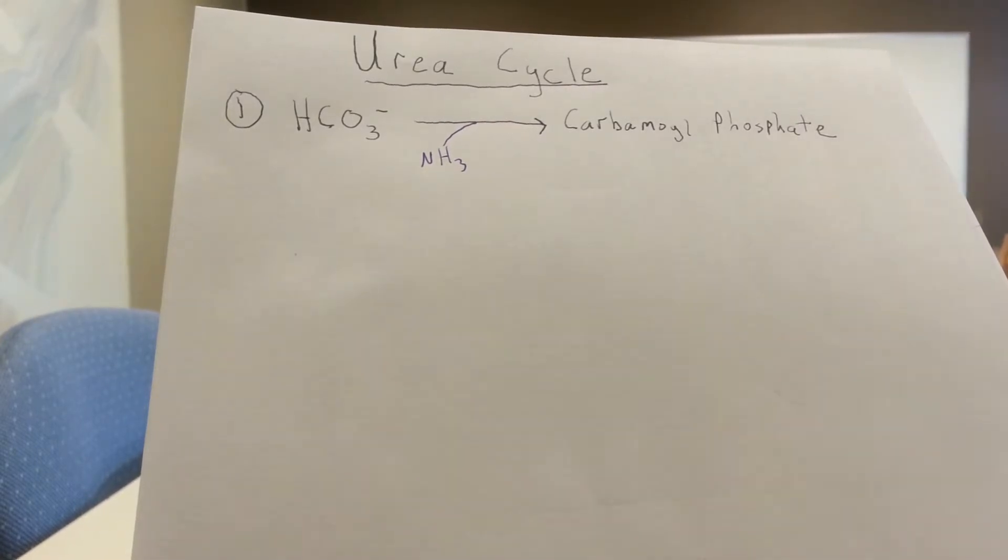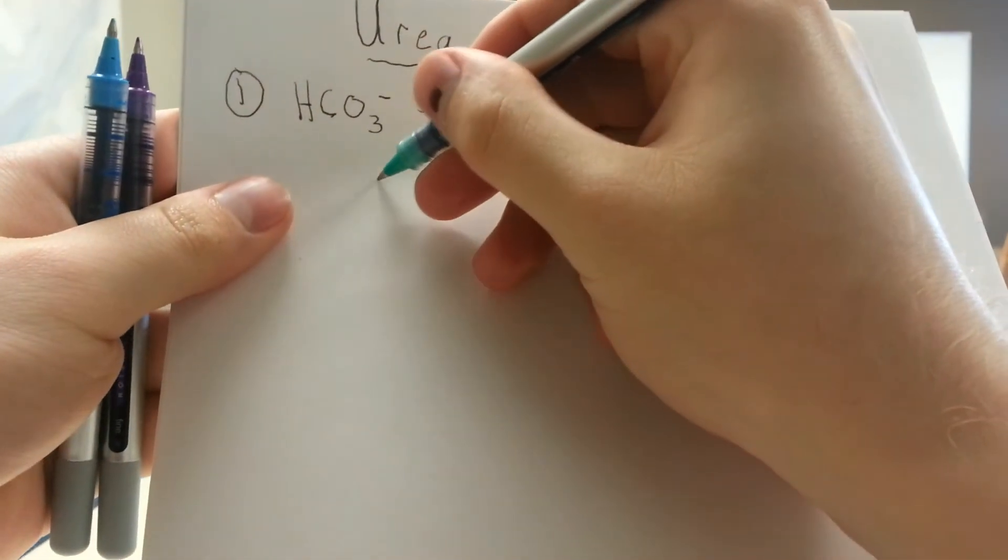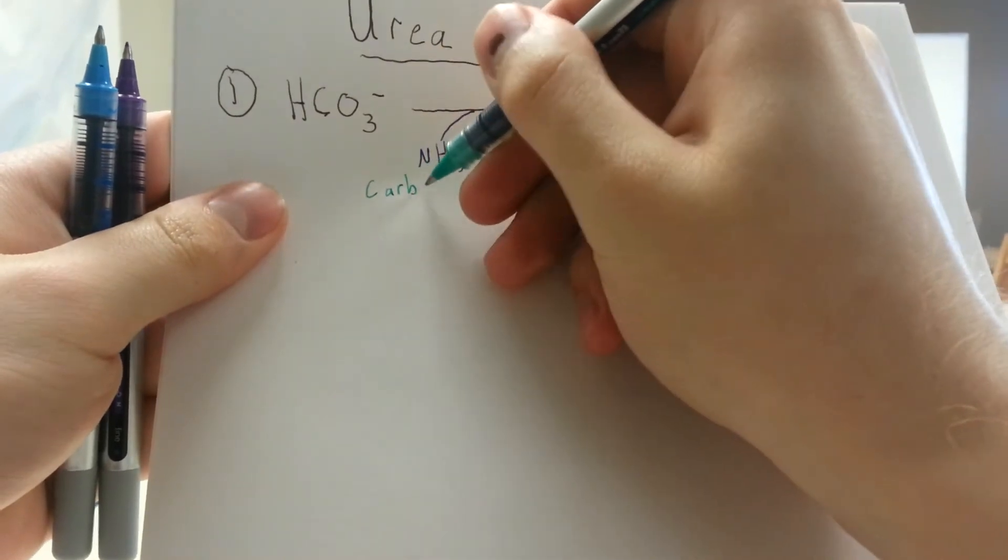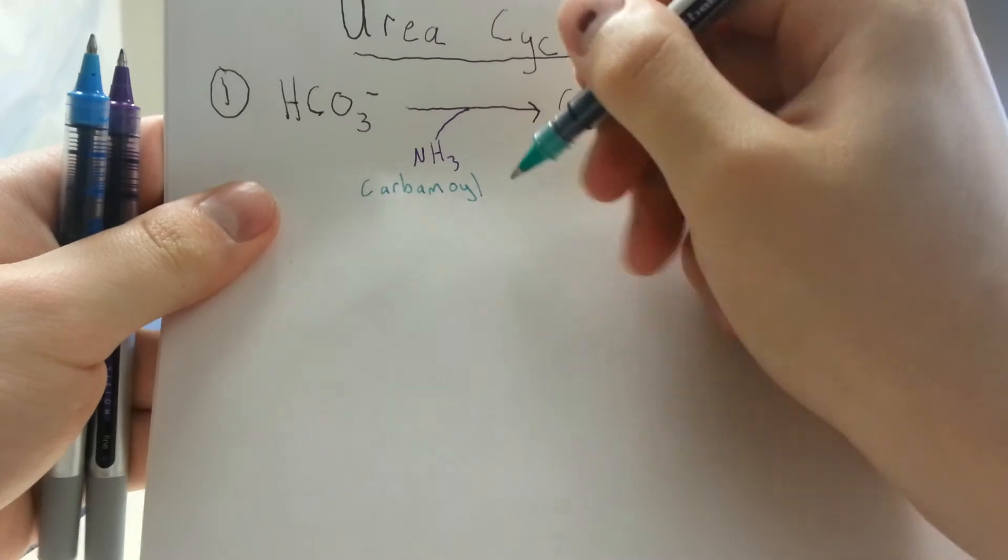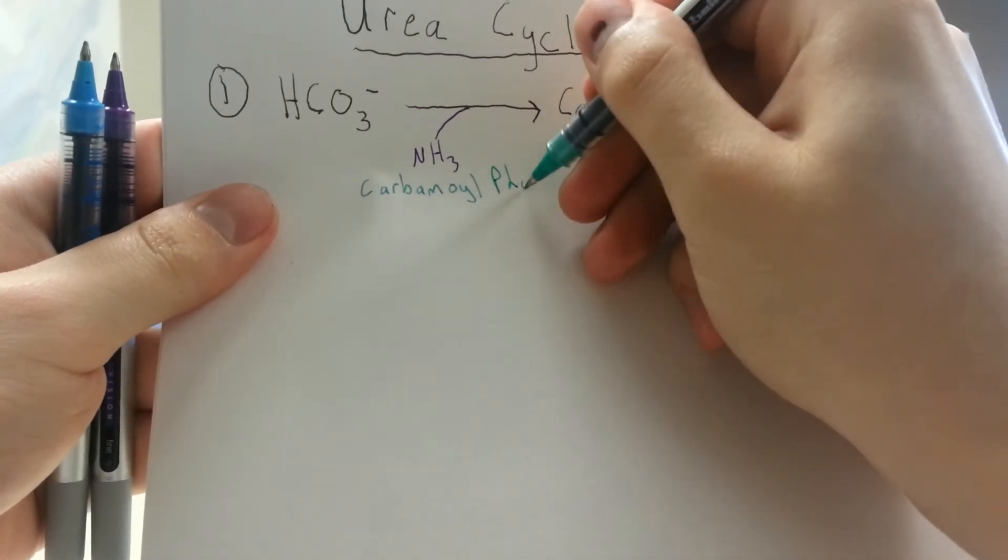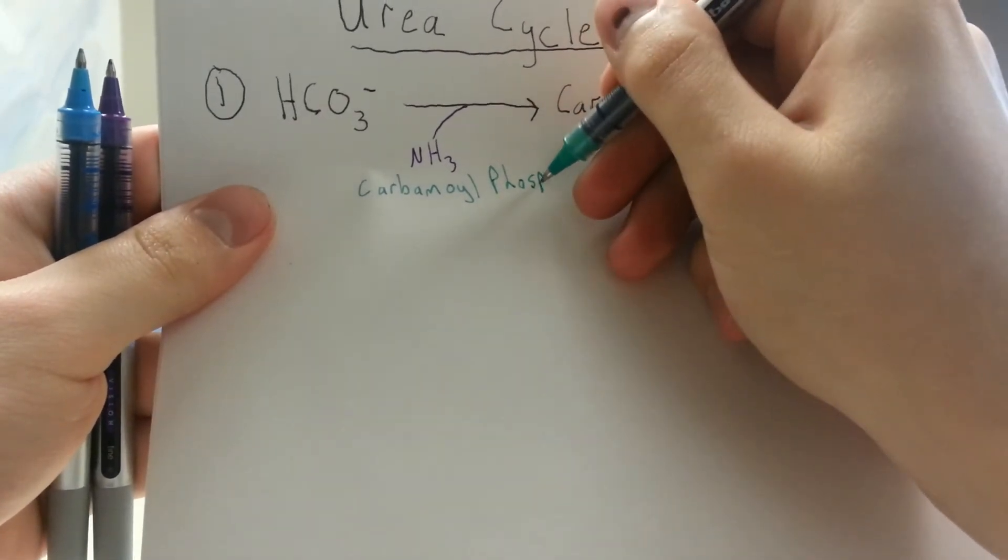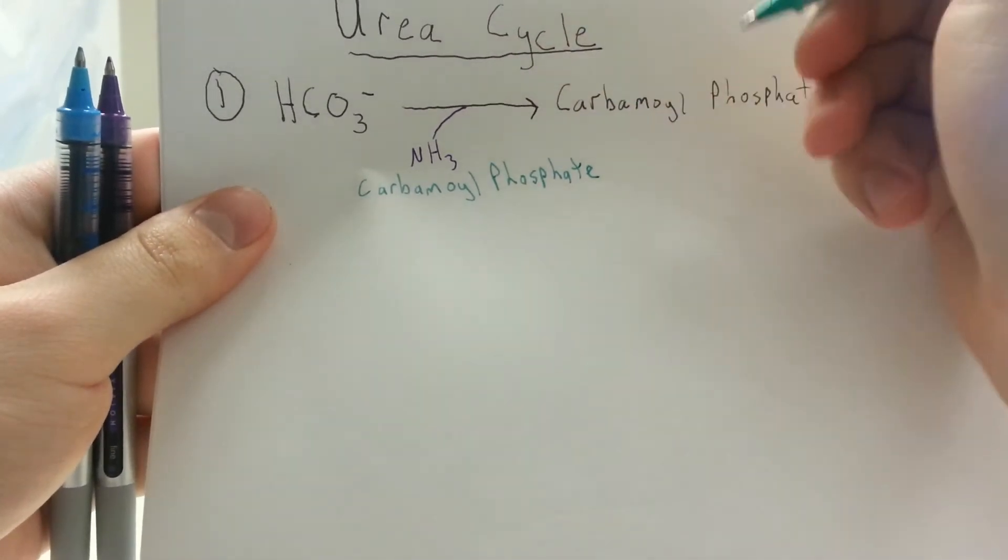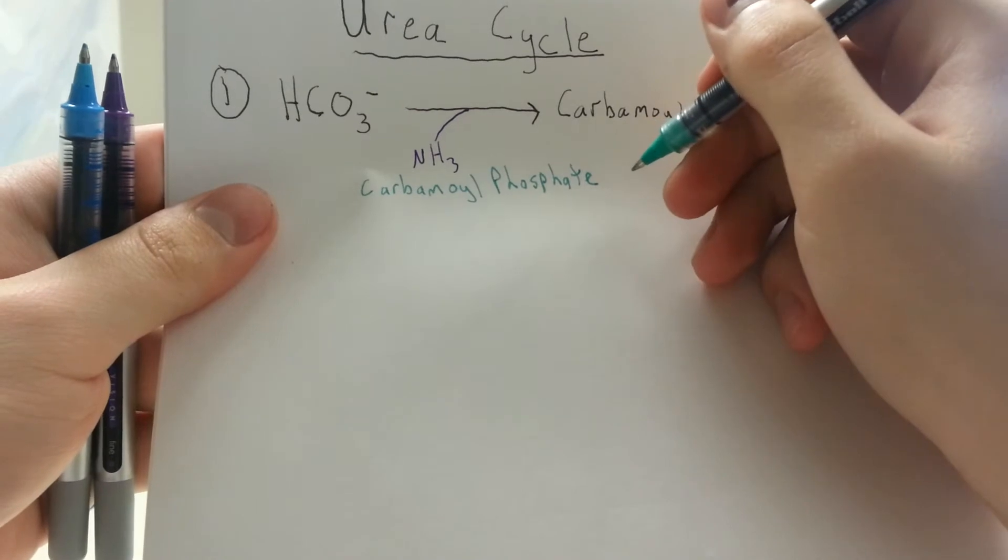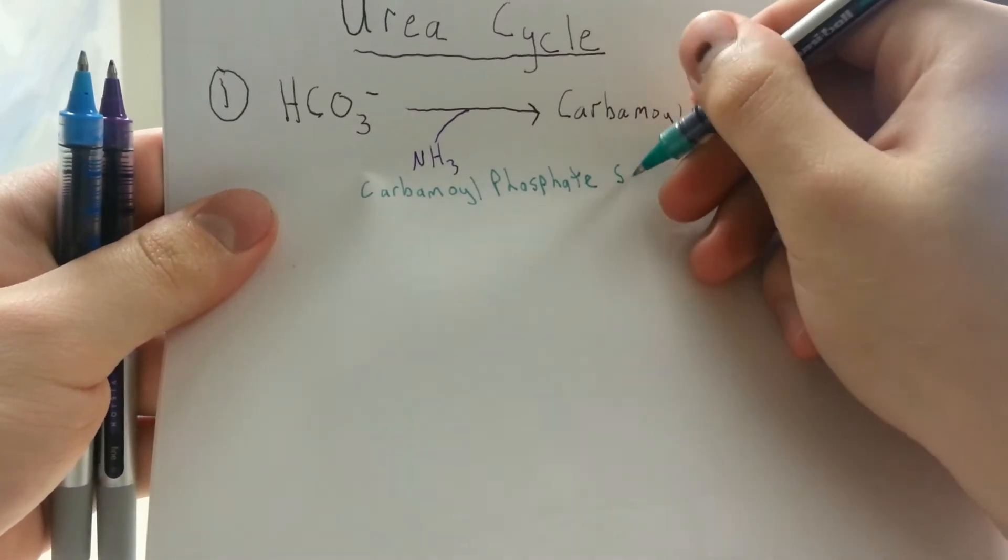And then the enzyme that's involved with this step is carbamoyl phosphate synthetase 1. And the nice thing about all these enzymes for this cycle is that they're very simply named, and if you can remember the compounds, you can generally figure out what enzyme you're dealing with. So this step is synthesizing a carbamoyl phosphate, so it's a carbamoyl phosphate synthetase. Pretty simple.